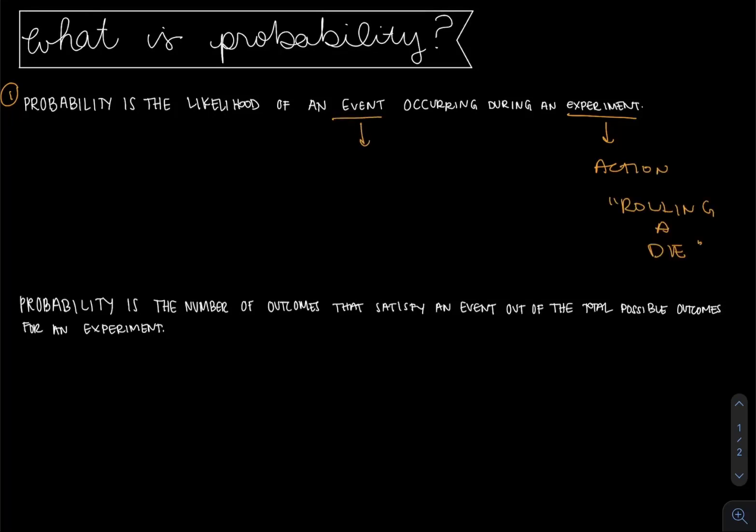An event is just a collection of outcomes. It could just be one outcome from an experiment. So we might have our event be getting an even number when rolling a die.